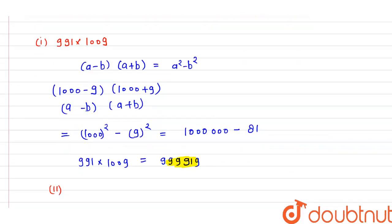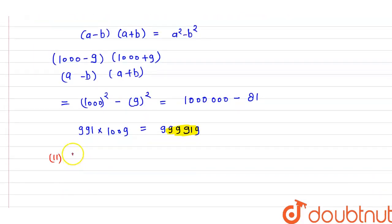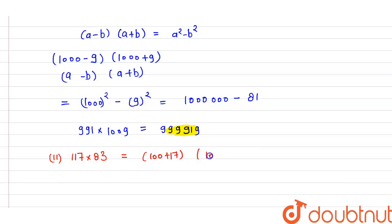The second part we have given is 117 into 83. We can write 117 as 100 plus 17, and 83 as 100 minus 17. This is also the form of (a plus b) in one bracket and (a minus b) in another bracket.